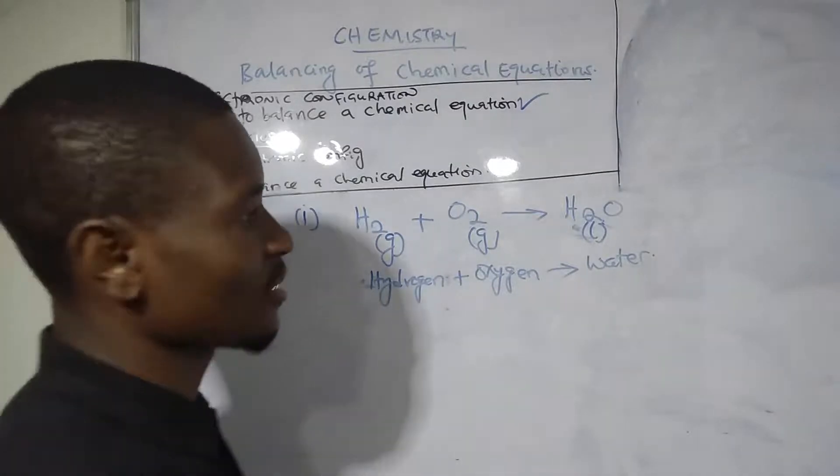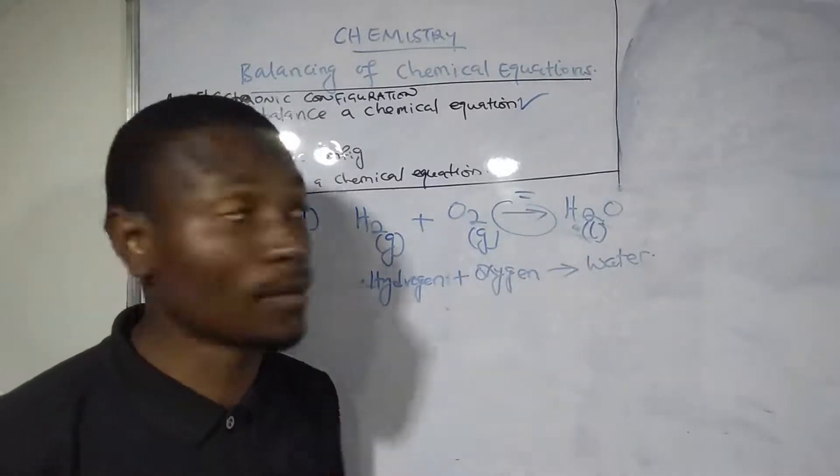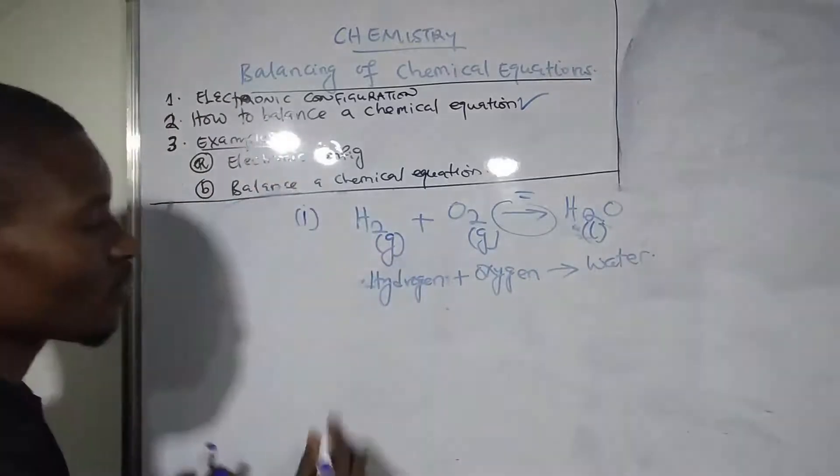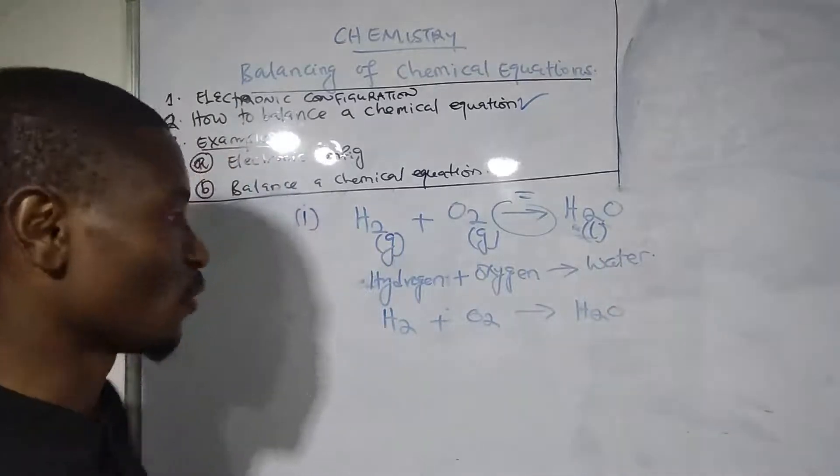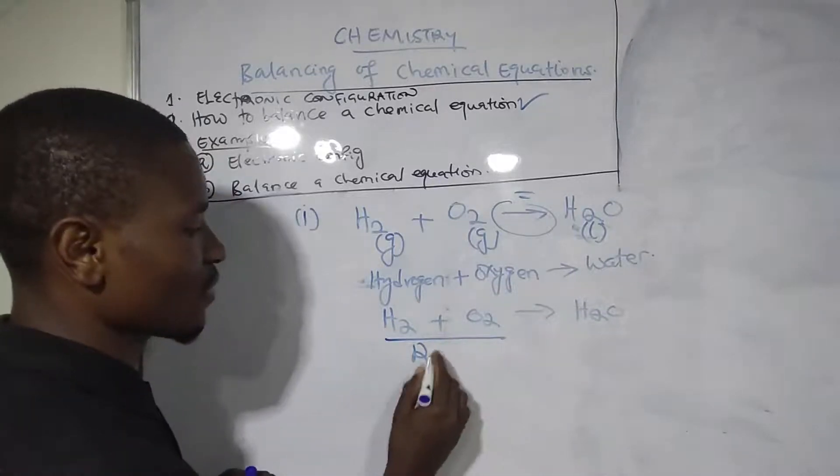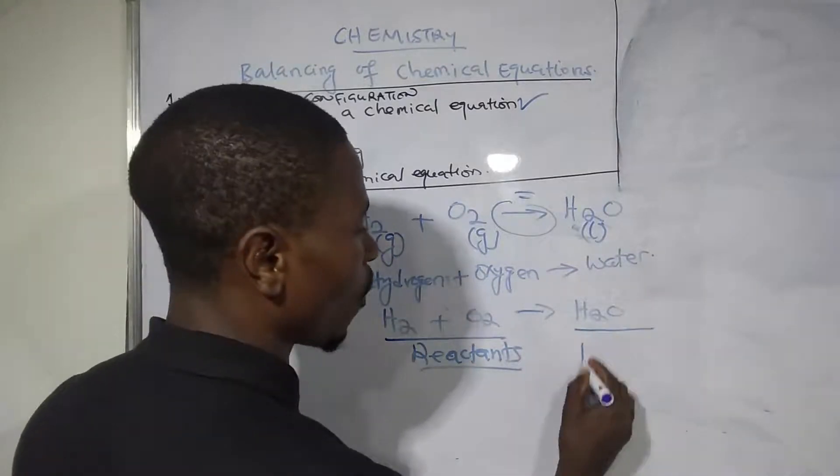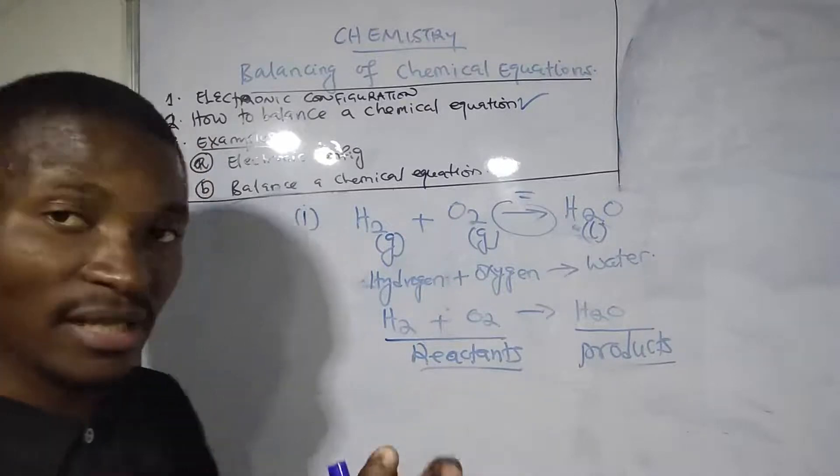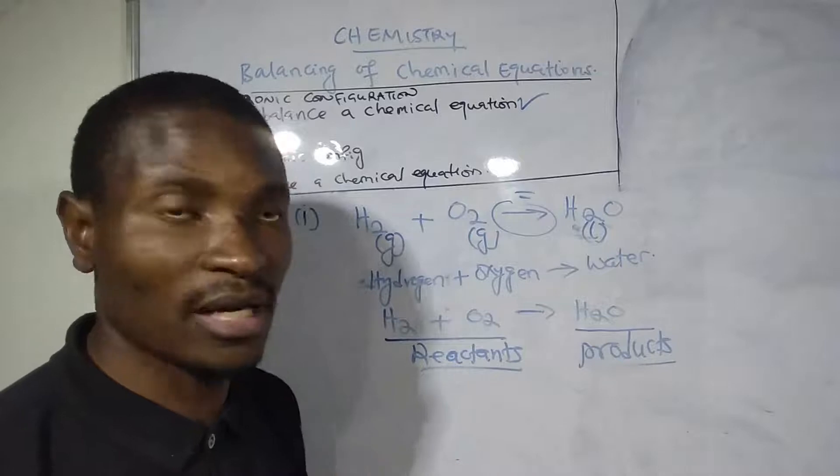Now we want to balance this equation. When balancing, we use a forward arrow instead of an equal sign to show that something is produced at the end of a chemical reaction. You have to understand that before the arrow, these elements are called reactants. After the forward arrow, they are called products. These are the products formed once the reactants mix and produce a compound or element.